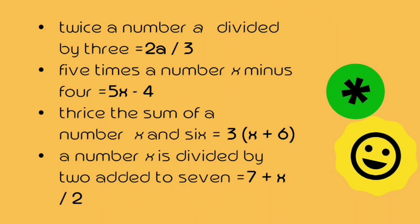4 times a number x minus 4 is equal to 5x minus 4. Thrice the sum of a number x and 6 is equal to 3 open parenthesis x plus 6 close parenthesis. A number x divided by 2 added to 7 is equal to 7 plus x over 2.